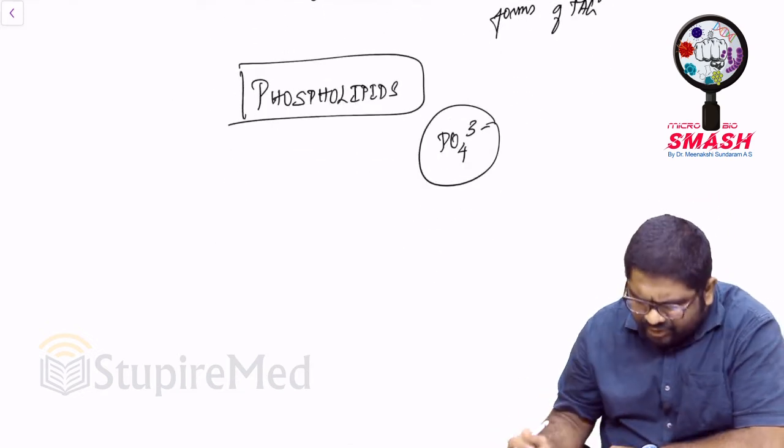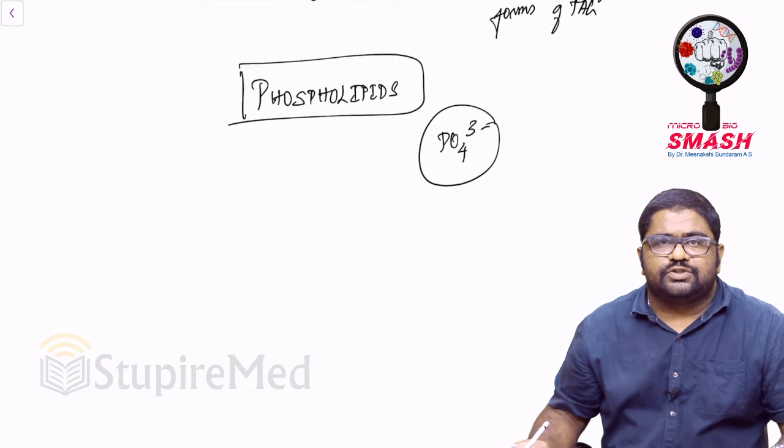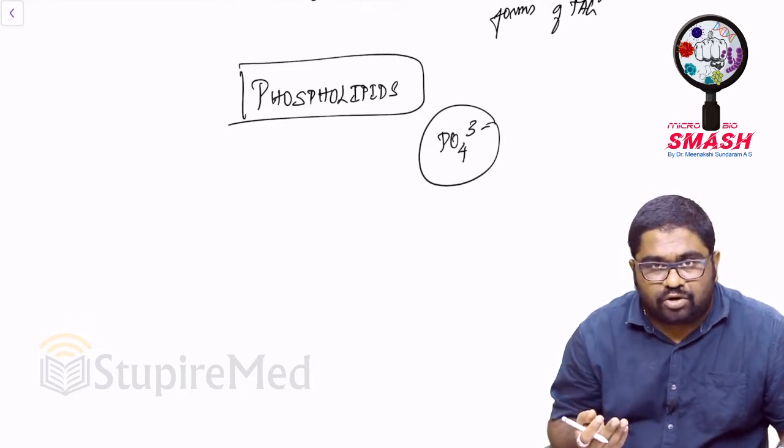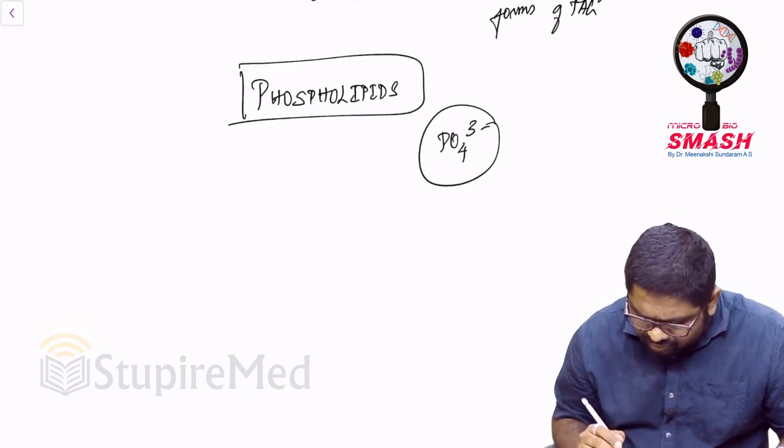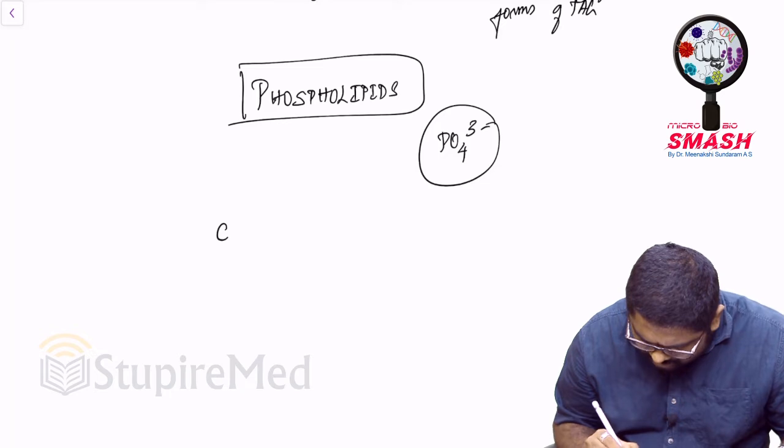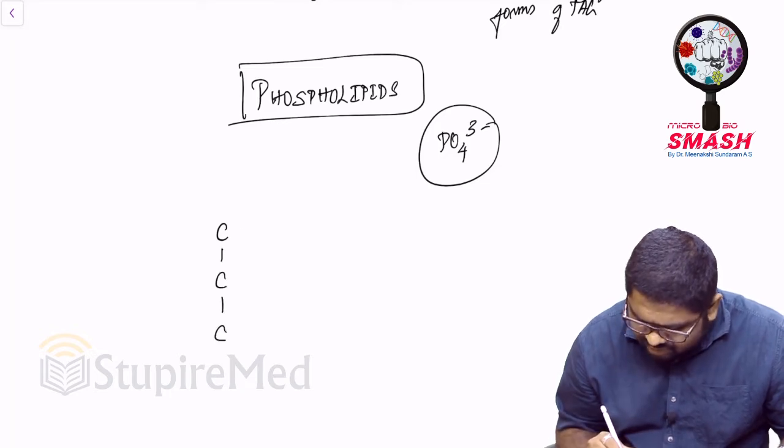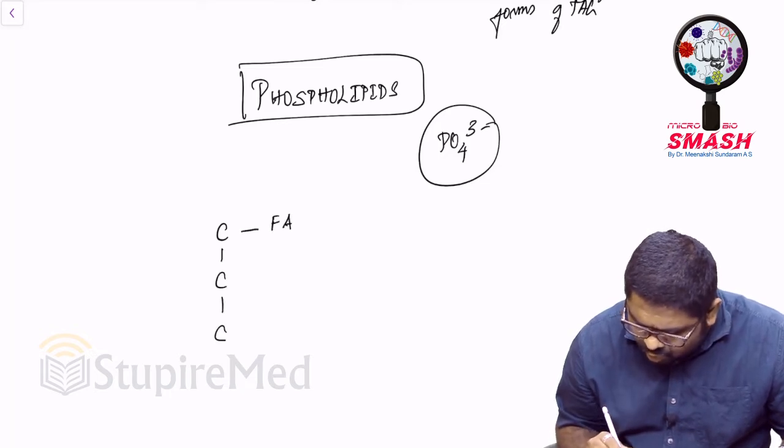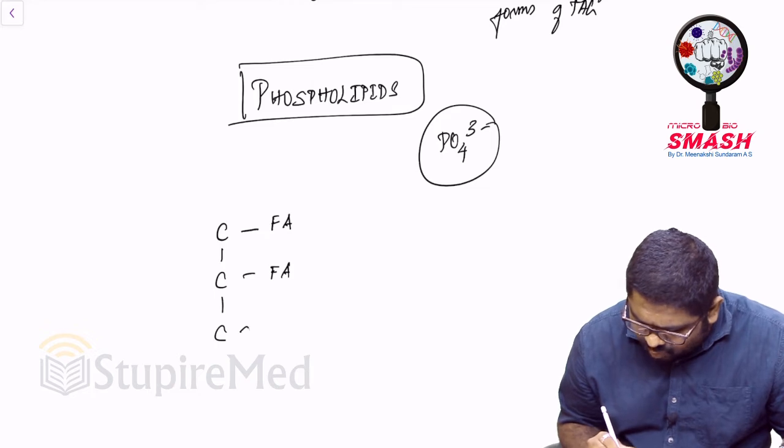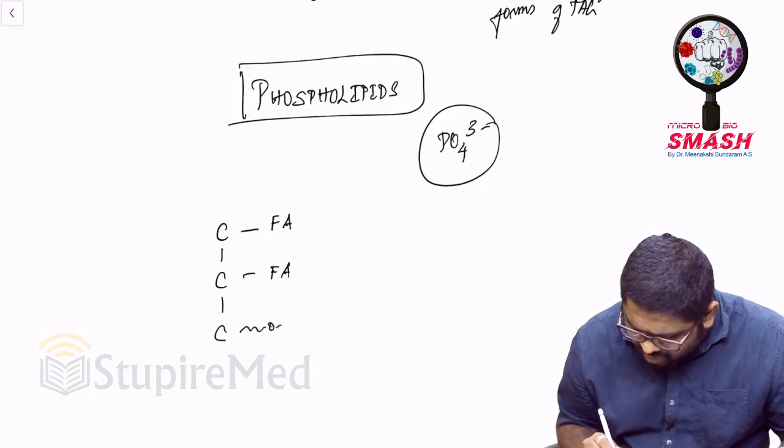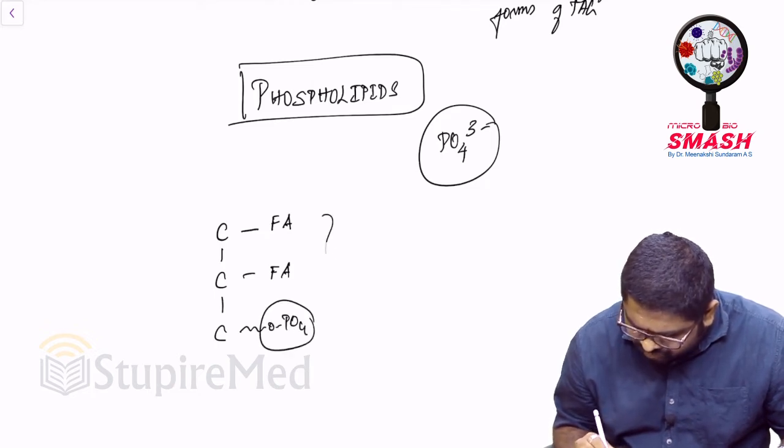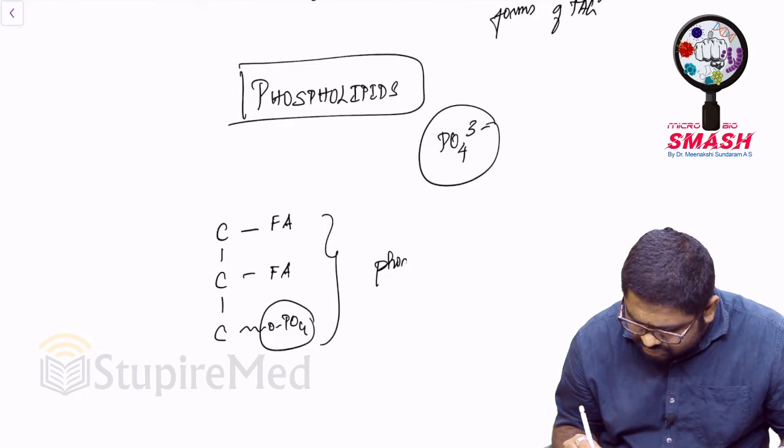So that will change the ball game completely when it comes to the difference between triacylglycerol and phospholipids. Now how exactly are you trying to introduce a phosphate into the phospholipids? When I have triacylglycerol with three carbons of glycerol, two of them having fatty acids while the third one is having a phosphate bound to it, this is called as phospholipid.